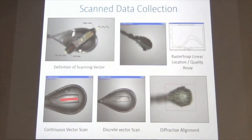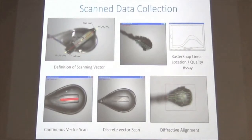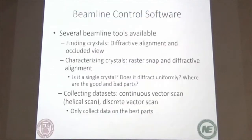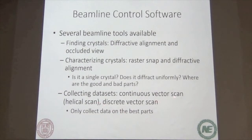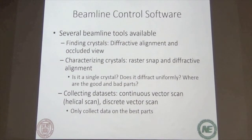I'm working on a labelit service, similar to a DISTL service, so it will be able to index each position and only allow a single lattice. And then there are other tools. This is another view of the diffractive alignment. The next thing we do is obviously collect the data once we've figured it out. There's a continuous vector scan — which some beamlines call a helical scan — or a step vector scan, which means basically 20 frames here, translated 50 microns, another 20 frames, and so on across the crystal. The continuous vector scan does a slight translation every single frame.